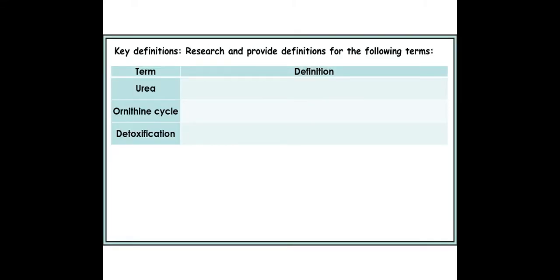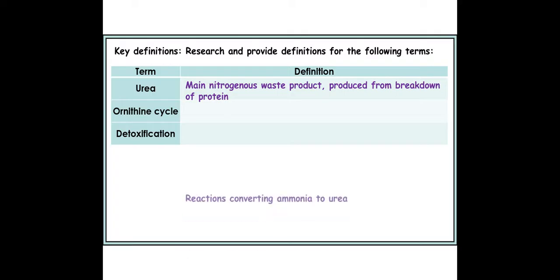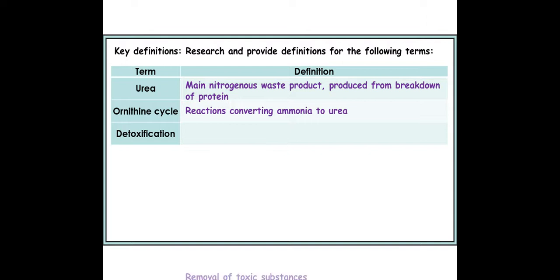So to start off with a couple of terms. Urea is the main nitrogenous waste from a mammalian body, produced with the breakdown of excess amino acids that make up proteins. The ornithine cycle is a cycle that occurs within the hepatocytes to convert ammonia into urea. Detoxification also occurs within the hepatocytes — the cells within the liver — involving the removal of toxic substances in the blood to convert them into less toxic substances.